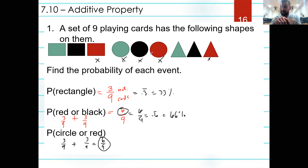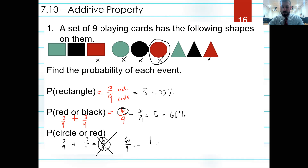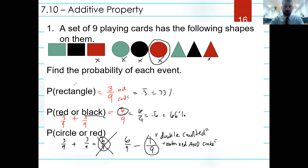This is the concept of non-mutual exclusivity. One card was counted twice — it was both a circle and red, but it's one independent card. We can't count it as both. So we do the same calculation but subtract the one that was double-counted. We didn't have to do this before because it's impossible for something to be both red and black — but it is possible for something to be both a circle and red, so we must subtract that overlap.